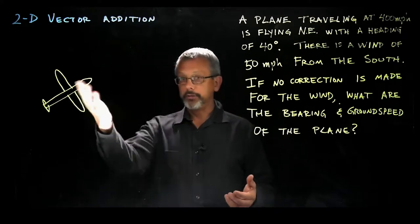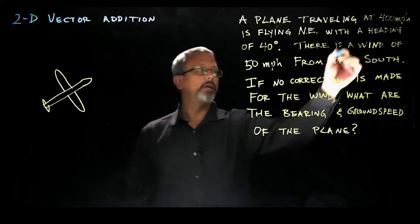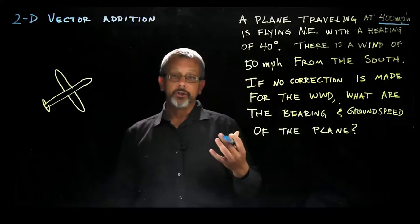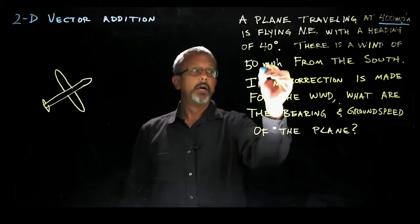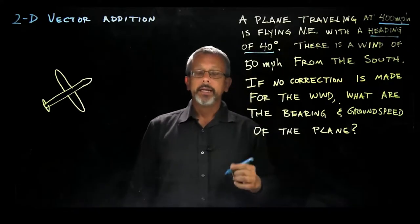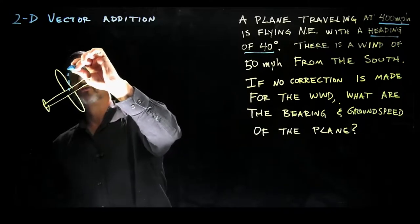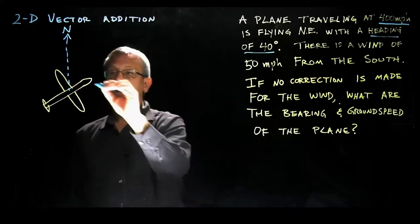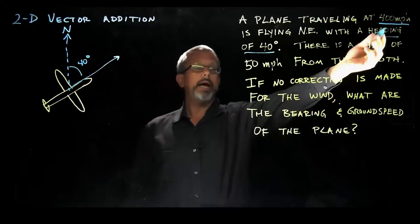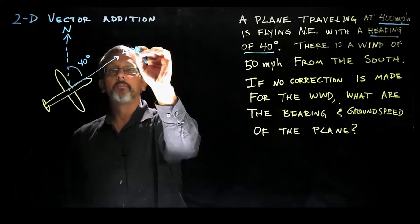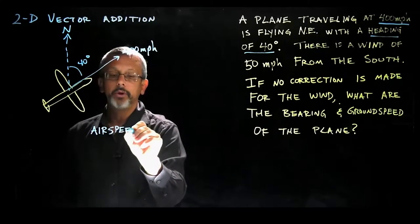Let's clarify by drawing. I've already created a sketch of a plan view of an airplane. The first piece of information is a vector magnitude of 400 miles per hour — this is the airspeed. That airspeed is given a direction, which is what makes it a vector: a heading of 40 degrees. Typically in geography and aerospace we define directions from north, so we go 40 degrees from north. Our vector magnitude, our airspeed, is 400 miles per hour. I'll code it in blue.